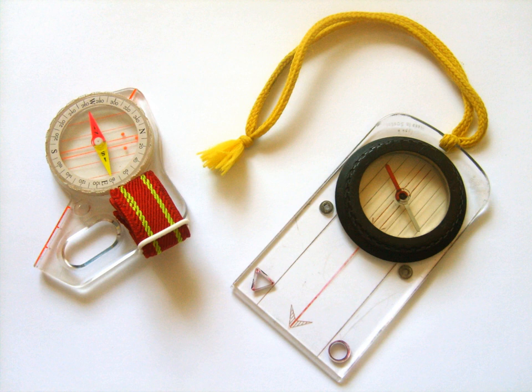Thumb compasses are also often transparent so that an orienteer can hold a map in the hand with the compass and see the map through the compass.